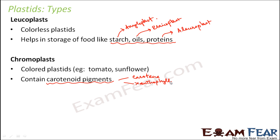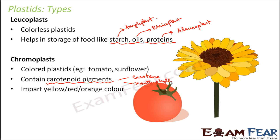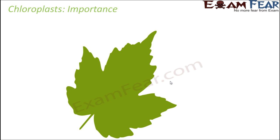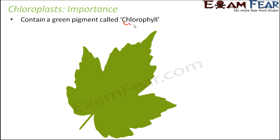Interestingly, the vegetable carrot got its name from the carotenoid pigment, which imparts yellow, red, or orange color. Examples like a sunflower or a tomato get their colors from these carotenoid pigments. Now, last but not least, chloroplast. They contain the green pigment called chlorophyll, which imparts green color to the leaves. It is because of this pigment that the process of photosynthesis takes place. If chlorophyll is not there, photosynthesis will not take place, food will not be prepared, and the plants will eventually starve and die.